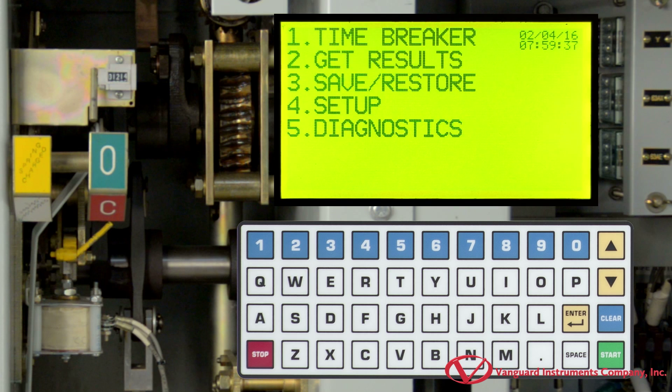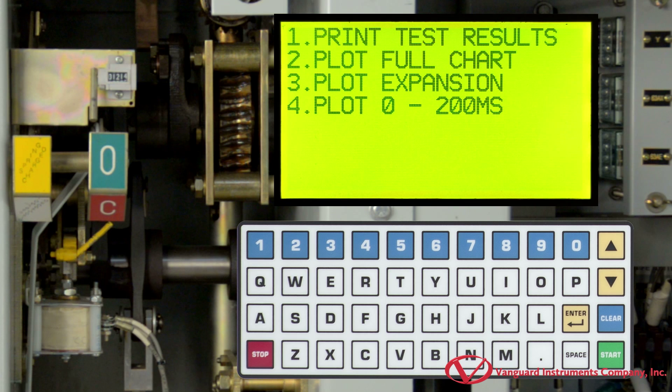We are now presented with multiple options for printing the test results. We are going to select Plot Full Chart by pressing the 2 key.